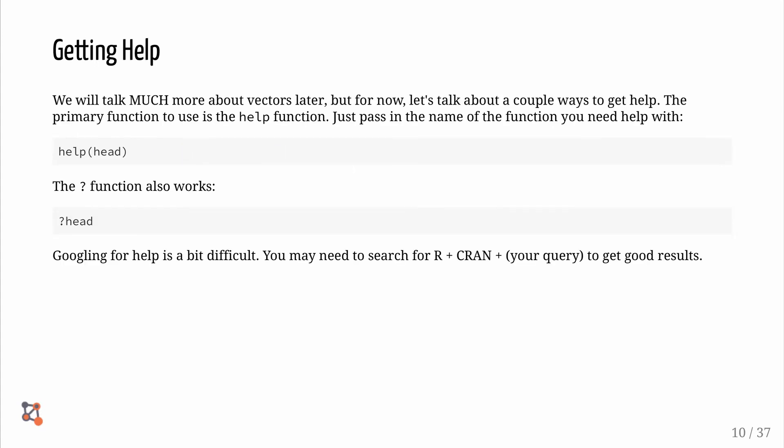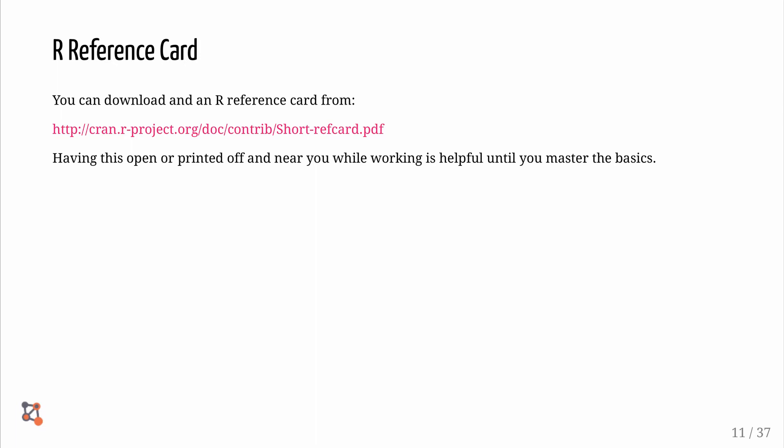Sometimes we need to get help. We will talk much more about vectors later. But for now, let's talk about a couple of ways to get help. The primary function to use is the help function. Just pass in the name of the function you need help with. Let's try help head. The question mark function also works. Sometimes Googling for help can be a little difficult. But if you use R plus CRAN plus your query, you can get good results. Another helpful tool is the R reference card. You can download the R reference card from the following website. Having this open or printed off near you while working is helpful until you master the basics.